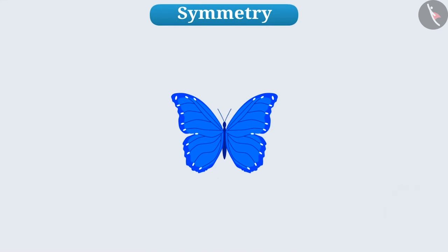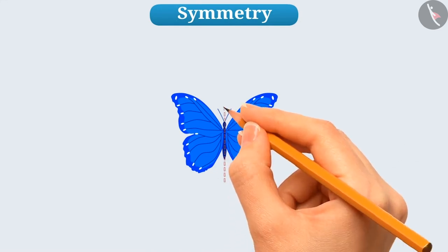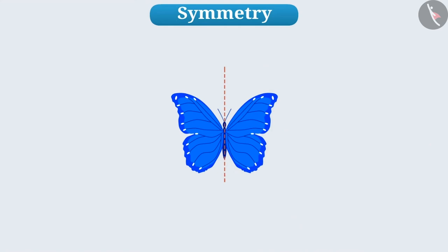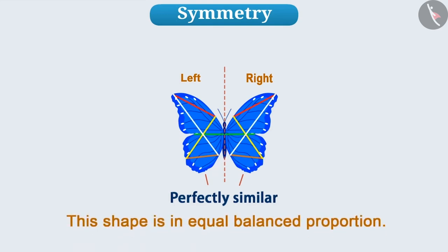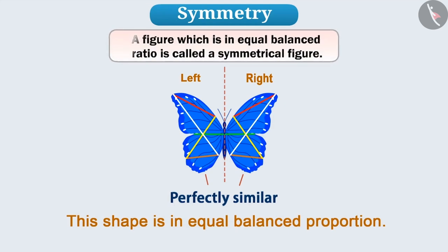We can divide this picture into two parts in such a way that the right half and the left half are completely similar. This is because this shape is in equal balance, that is, in equal proportion. By proportion and balance, its shape looks attractive to the eyes. A figure which is in equal balanced ratio is called a symmetrical figure.